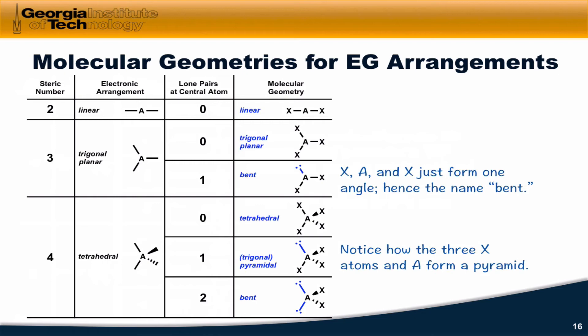For a steric number of four with no lone pairs, we again see a match between the molecular geometry and the electron group arrangement: tetrahedral geometry, tetrahedral arrangement. With one lone pair — that's the NH3 situation — one lone pair occupies one of the positions of the tetrahedron, and the other three x atoms and the A atom form a pyramid. So this is known as trigonal pyramidal. With two lone pairs, we get xAx forming a single angle again, and so this is called a bent geometry. Note, however, that the bond angle between x, A, and x would be 109.5 degrees, whereas the angle in the trigonal planar case would be 120 degrees.